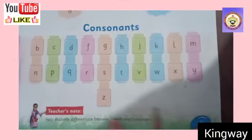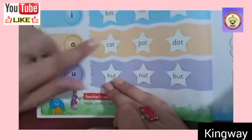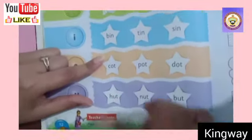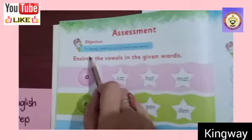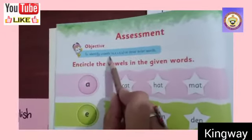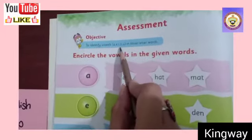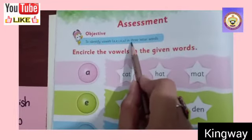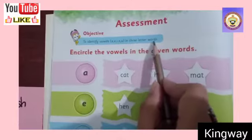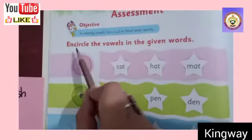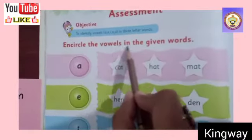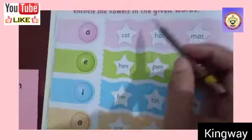Next, we will solve the assessment. Because now that you have learned vowels and consonants, the vowels part of the assessment is to identify vowels A, E, I, O, U in three-letter words. Encircle the vowels in the given words.